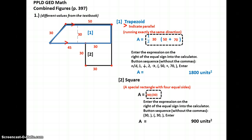We need the total area of the entire figure, so we're going to have to add our latest result to the previous result of 1,800 above it in blue. And we come up with a total of 2,700 square units.